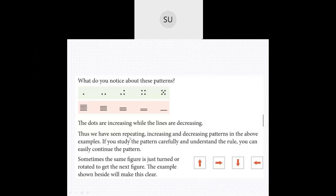So we have seen repeating, increasing and decreasing patterns in the above examples. If you study the patterns carefully and understand the rules, you can easily continue the patterns. Sometimes the same figure is just turned or rotated to get the next figure. This arrow shows upwards, this one shows right, this one shows down and this one shows left - they are just rotating or turning this arrow to form a pattern.